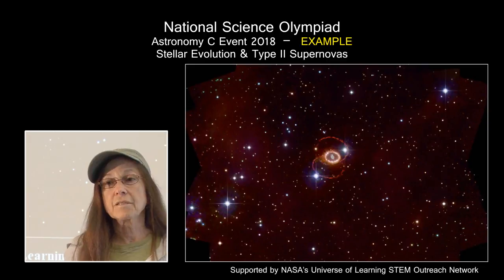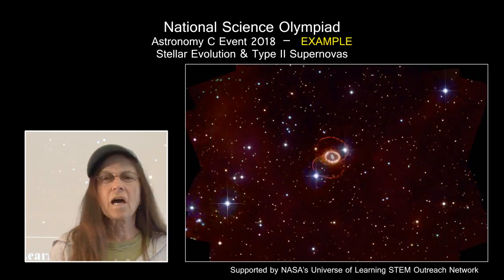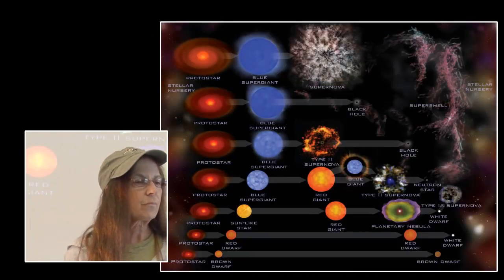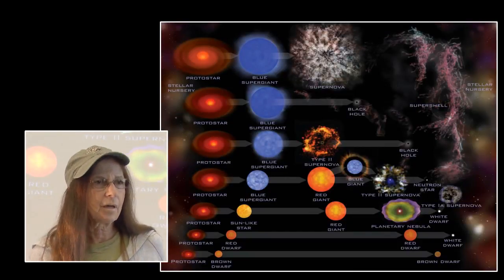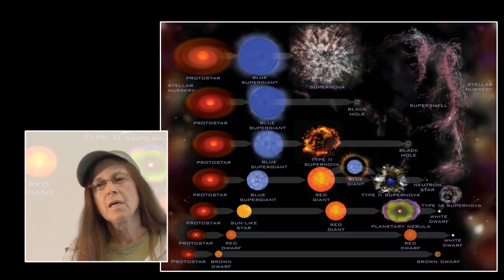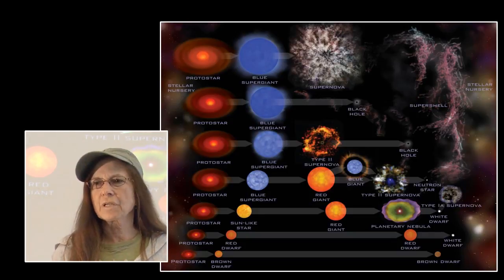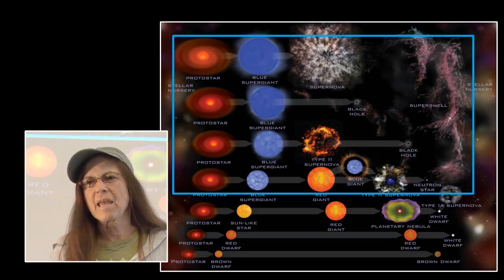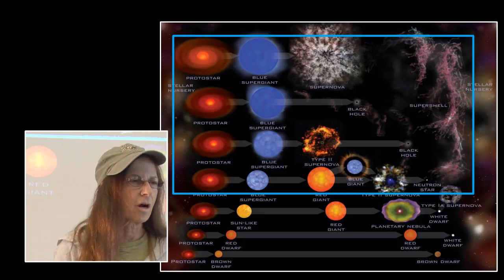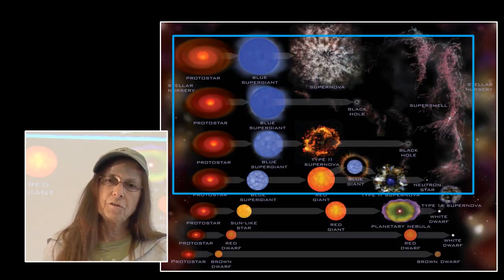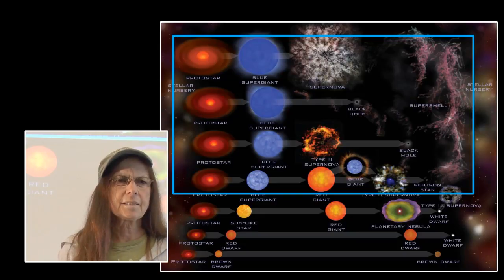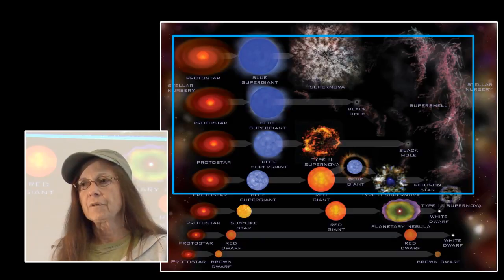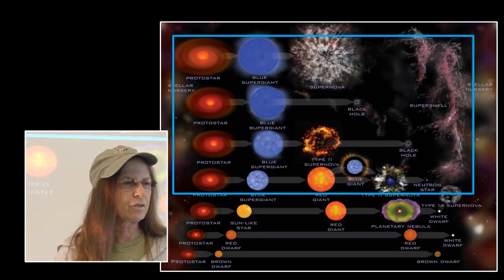This year, 2018, the topic is stellar evolution and Type II supernovas. If you go back and look at our illustration that shows stars evolving over time into their final end products, we are focusing on the top end—the more massive stars and what happens to them. For 2018, we are concentrating on some really massive stars, more massive than we have presented before, so it is a little bit more interesting.